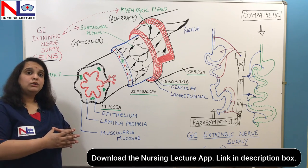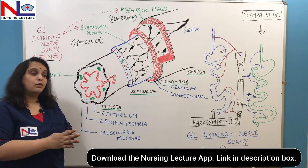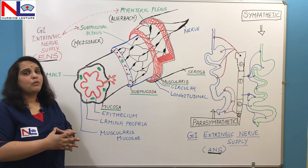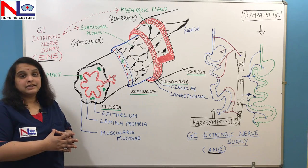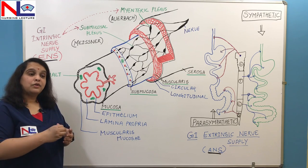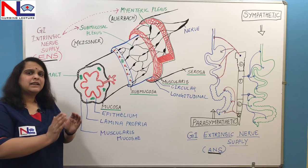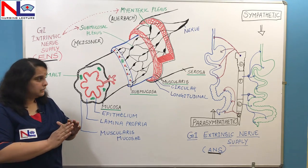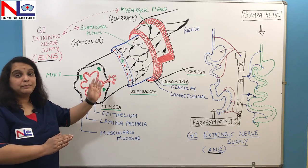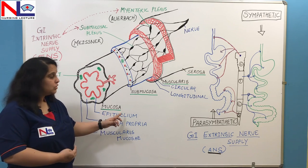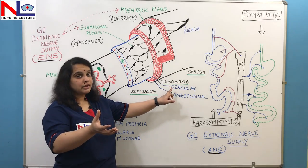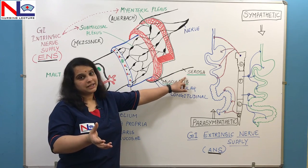There are four basic layers which extend from the esophagus to the anus, though there are some modifications in these layers depending on their function. From inner to outer — or deep to superficial — the innermost is the mucosa, then the submucosa, superficial to that is the muscularis, and the outermost one is the serosa.